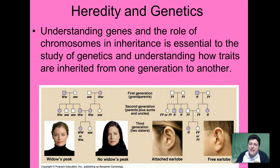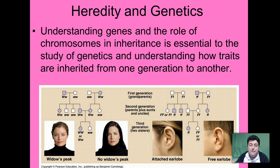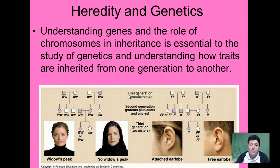Understanding genes and the role of chromosomes in inheritance is essential to the study of genetics and understanding how traits are inherited from one generation to another. As we further explore genetics, we're going to continue to look at genes and chromosomes and how they're passed from parents to offspring, so that we can better understand genetics and inheritance.